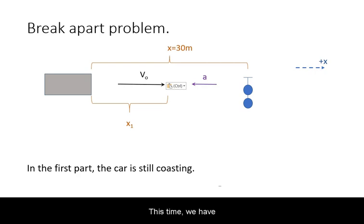This time we have three events to keep track of. We have the start of the problem where the car is still 30 meters away from the point of impact. Then we have a coasting time of the 2 seconds before the driver is able to react. Finally, we have the impact point.